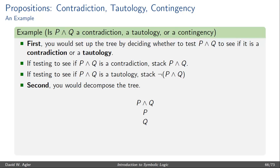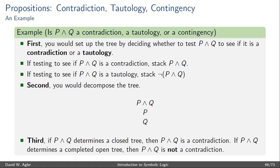Let's test P ∧ Q to see if it's a contradiction. We stack P ∧ Q and decompose the tree. Once completely decomposed, if P ∧ Q determines a closed tree, then P ∧ Q is a contradiction. However, if P ∧ Q determines a completed open tree, then P ∧ Q is not a contradiction — it is either a tautology or contingency. But we can't tell which from this test alone, so we'll need to perform another test.